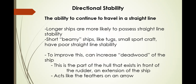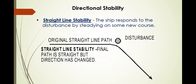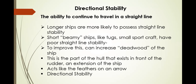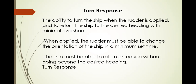Other vessels noticeably have what we call fin-like structures. If you have that, you have better directional stability — the deadwood of the ship, visible when the vessel is in dry dock at the bottom sides. Straight-line stability means the ship responds to a disturbance by steadying on some new course. Turn response is the ability to turn the ship when the rudder is applied and to return the ship to the desired heading with minimal overshoot. When applied, the rudder must be able to change the ship's orientation in minimum time and return on course without going beyond the desired heading.